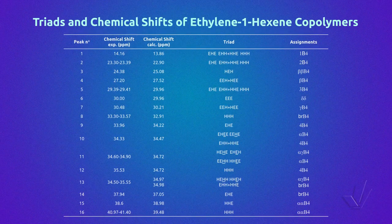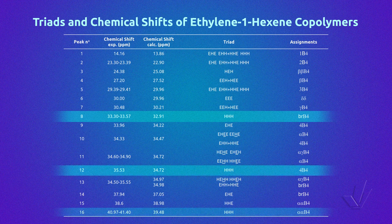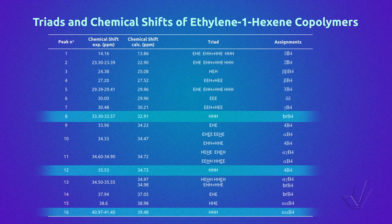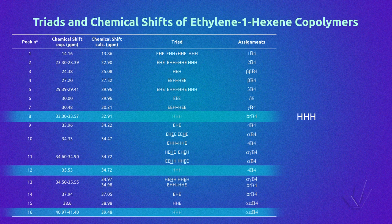We can also see above the spectrum peaks the corresponding sequences and carbon atoms in accordance with the previous table. Now we are going to take the table again and try to make a quantitative analysis to relate the triads with the integrals. We can see that the triad HHH is represented by peaks 8, 12, and 16. So we can write the following equation: HHH equals K, the normalization constant, multiplied by the sum of the integrals of peaks 8, 12, and 16, divided by 3 to obtain the average. When there is the possibility to have a triad represented by different peaks, it is always preferable to take an average of all the integrals to minimize errors.